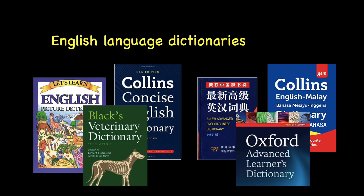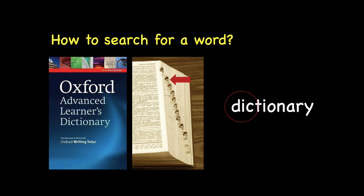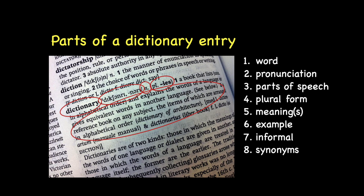In the previous videos, we talked about the different kinds of English language dictionaries — the bilingual dictionary and also the monolingual dictionary. After that, we also talked about how to search for a word and the different parts of a dictionary entry: the word, pronunciation, parts of speech, plural form, meanings, example, informal, and synonyms.